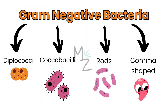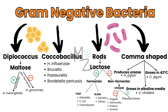Gram-negative bacteria are also classified based on different shapes: diplococci, coccobacilli, rods, and comma-shaped. Diplococci are further classified based on maltose fermentation — if a bacterium ferments maltose, it's Neisseria meningitidis; if it doesn't, it's Neisseria gonorrhoeae. Coccobacilli include Haemophilus influenzae, Brucella, Pasteurella, and Bordetella pertussis. I've recently uploaded a video on Bordetella pertussis — if you missed that, be sure to check it out.